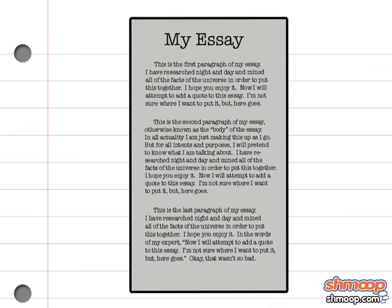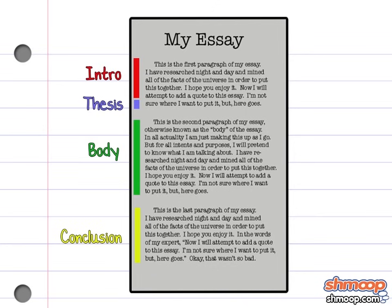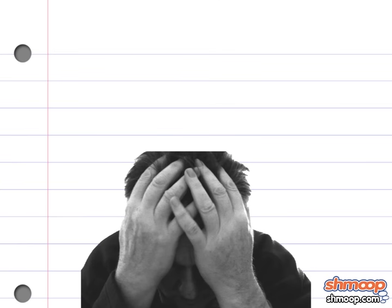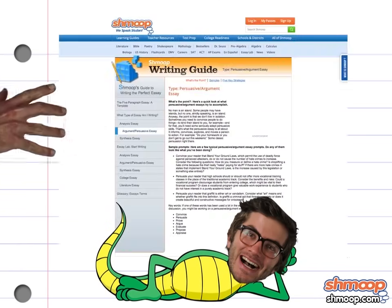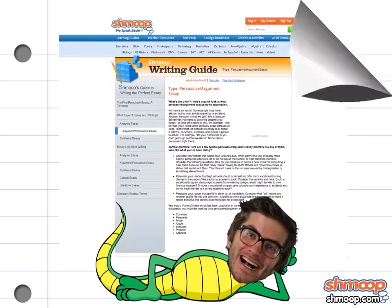So how is this puppy organized? You've got your intro, a thesis that states your overall opinion, the body of the essay will have your supporting points, and finally your conclusion in which you wrap things up neatly. If that seems like a bit much, don't panic. Shmoop's writing guide has help and more info on these terms.